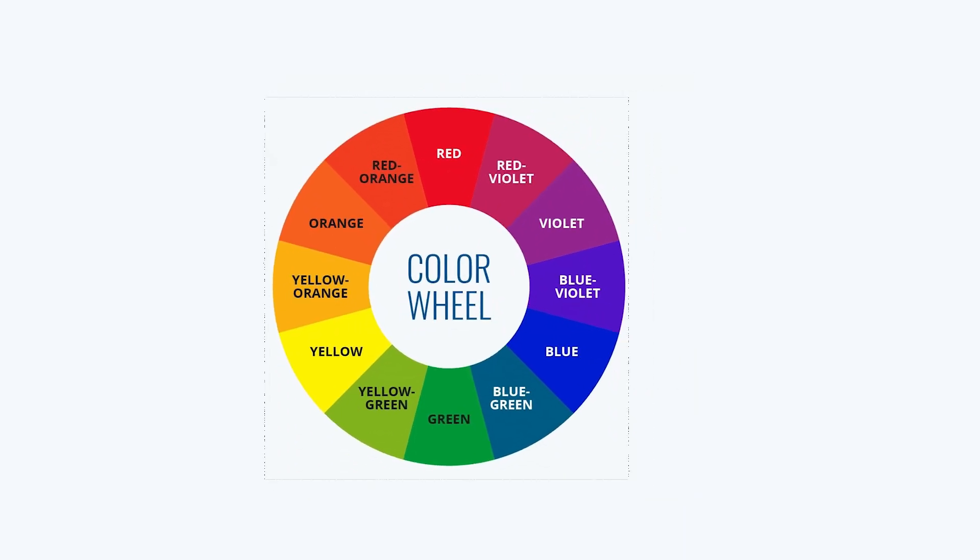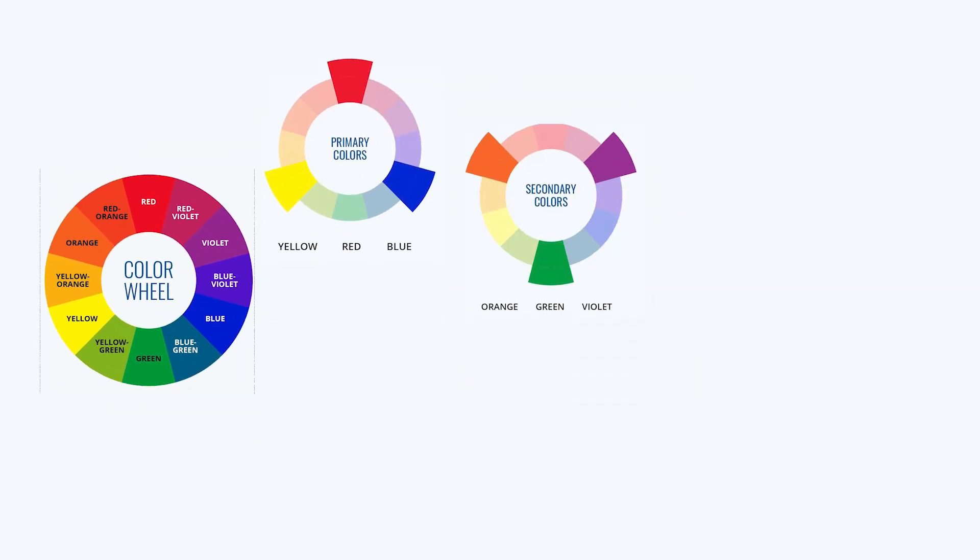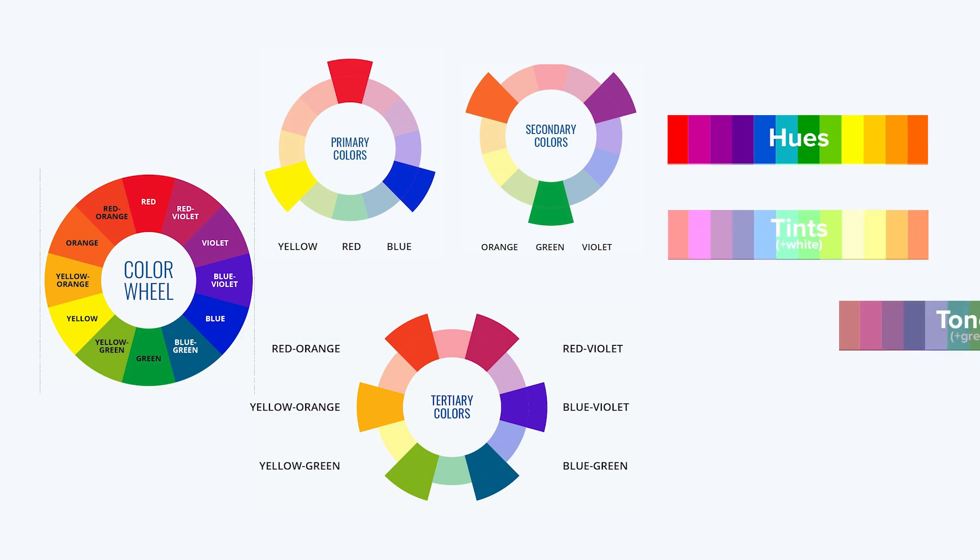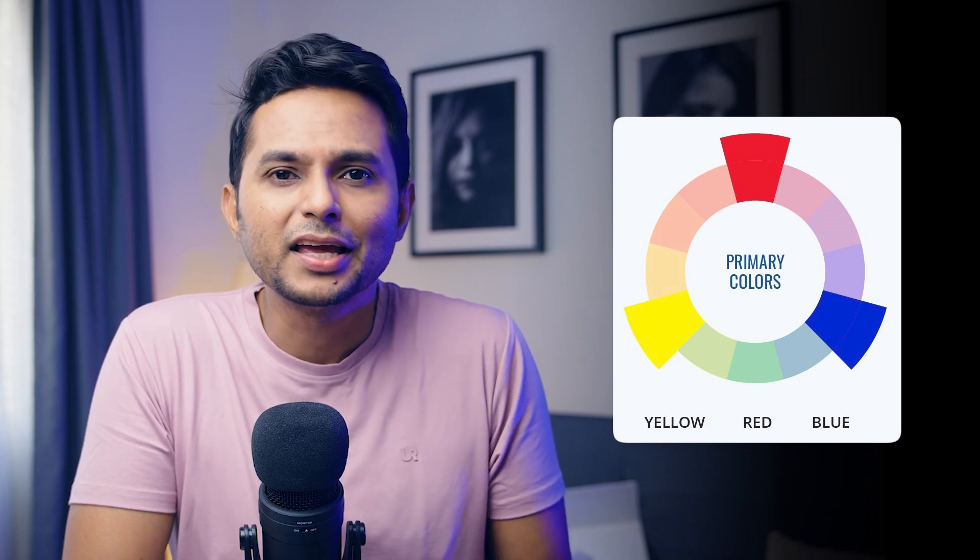The color wheel is a circular graph that charts each primary, secondary, and tertiary color, as well as their respective hues, tints, tones, and shades. Red, yellow, and blue form the basis of the color wheel — these are called primary colors, which are like your parent colors. The combinations of primary colors are called secondary colors. For example, orange is a combination of red and yellow, green is a combination of yellow and blue, and purple is made from blue and red. As you experiment and combine primary colors with secondary colors, the result is tertiary colors.